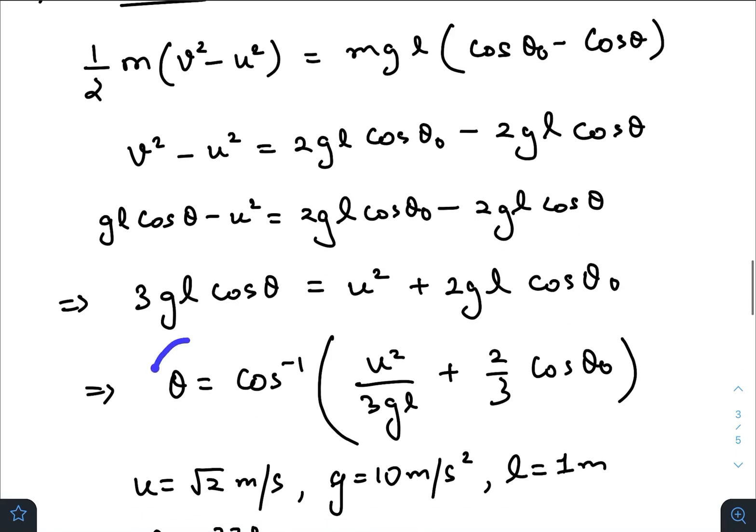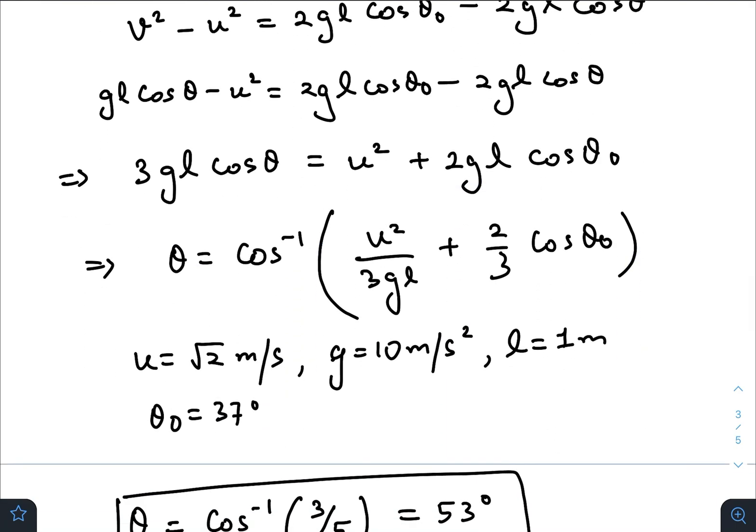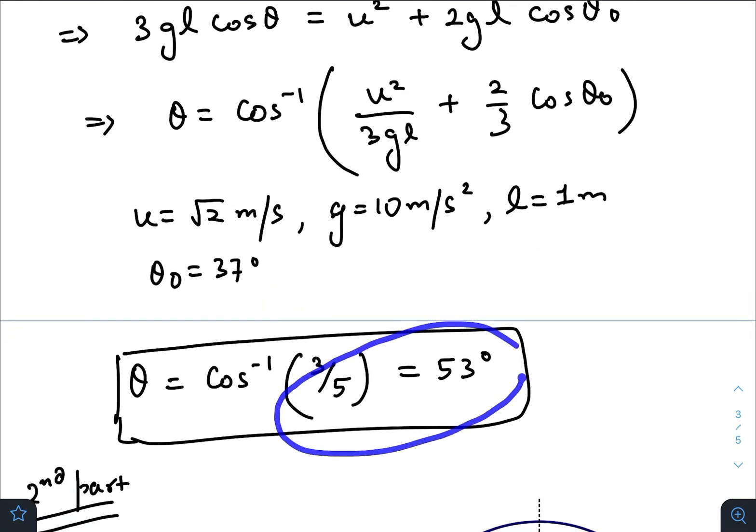Finally we get the value of θ as cos⁻¹(2/5). Just put the values and you will get θ = 53°. This is the answer of our first part of the question.